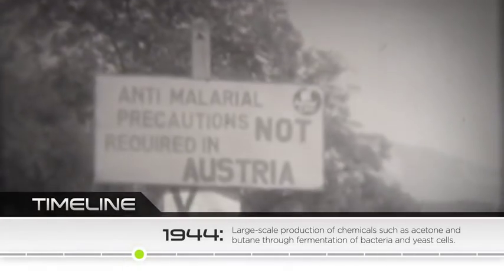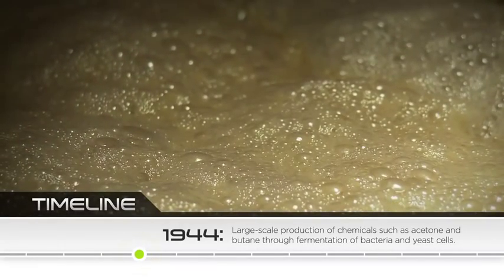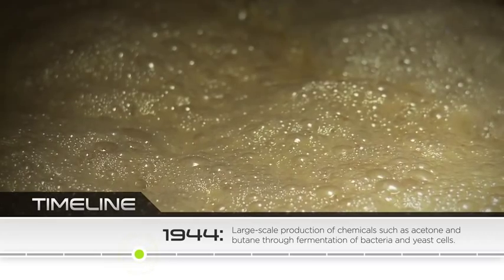For example, during World War II, when the demand for chemicals such as acetone and butane was high, scientists discovered that these could be produced on a large scale through fermentation by bacteria and yeast cells.